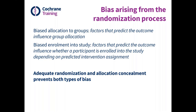If randomisation is not used adequately, there may be biased allocation to groups. Prognostic factors may influence the intervention group to which participants are assigned, and if this happens, the estimated effect of the intervention could be biased by confounding — which occurs when there are common causes of intervention group assignment and outcome. So the factors that predict the outcome influence group allocation.